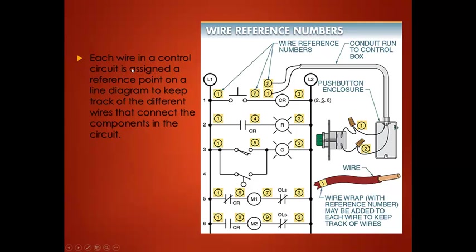Each wire in a control circuit is assigned a reference number on a line diagram to keep track of the different wires connecting components. The numbering system shown may differ from what you'd use in your workplace, but there is always a numbering system to track wires as you install them. Reading across: wire one, two, three — a wire is still labeled one if it's electrically the same point, since current can flow through it just as easily. Anything attached to the power source carries the same number all the way down.